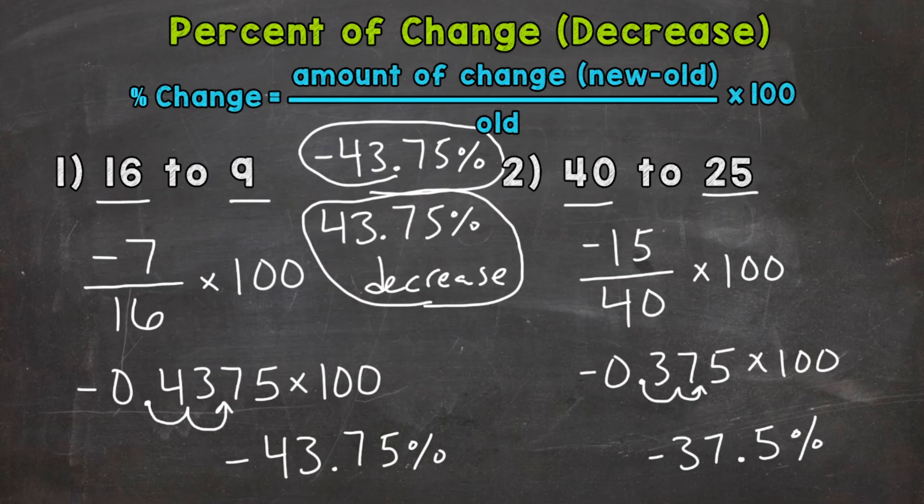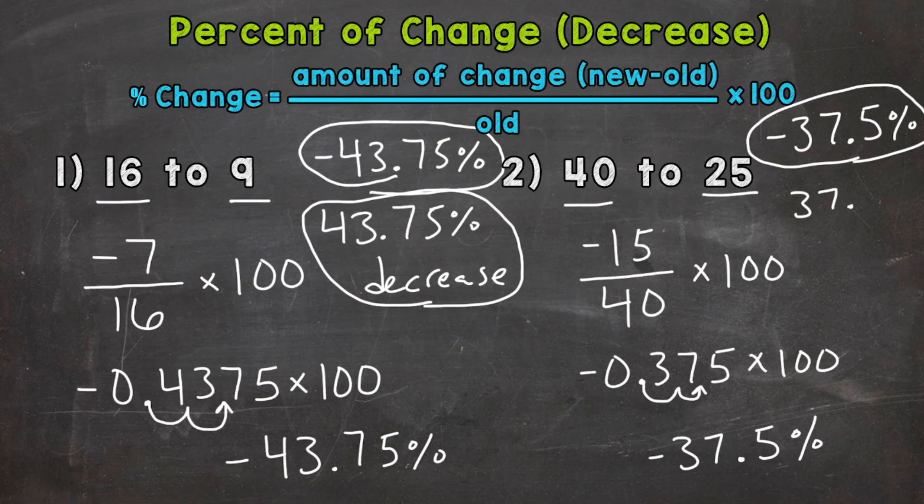So let's express it in our two different ways to show our final answer. We can say negative 37.5 percent. That negative represents a decrease, so this would be one way. Or we can write it out as 37.5 percent decrease.